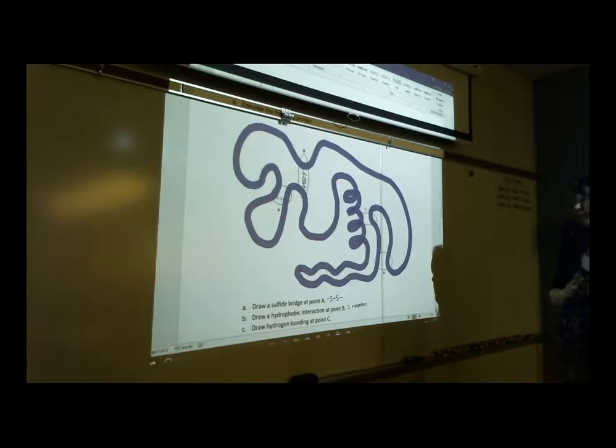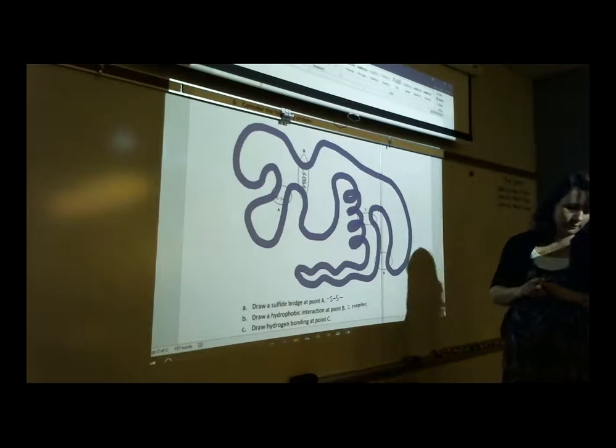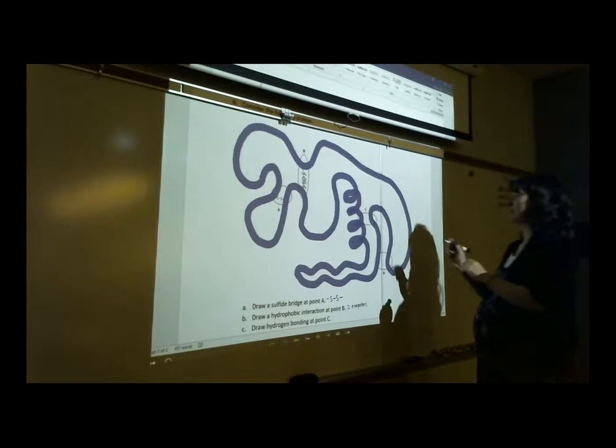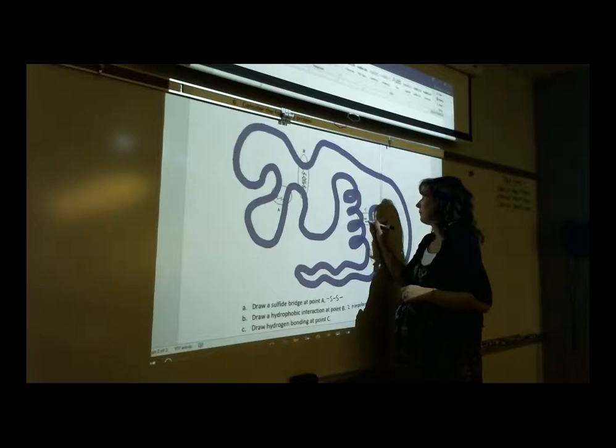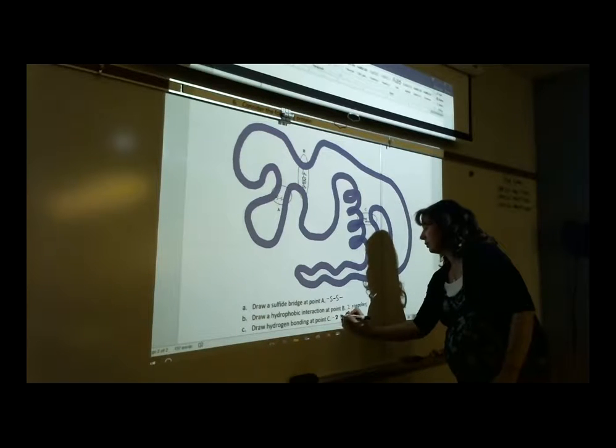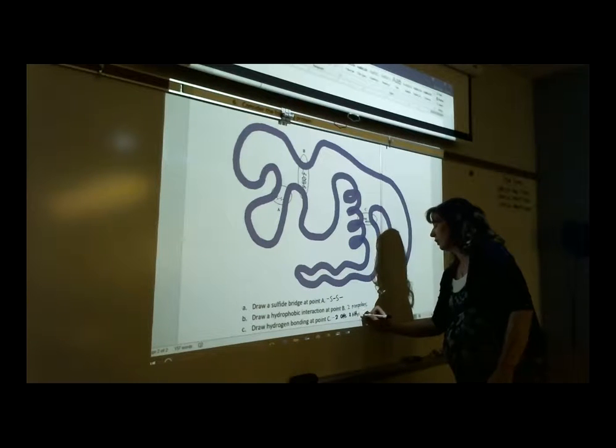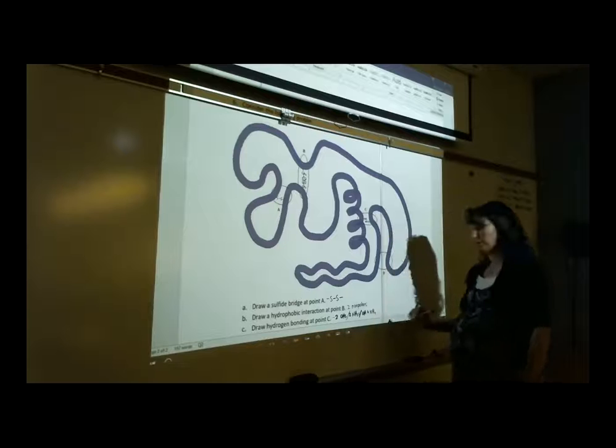Draw hydrogen bonding at point C. So what did you pick? Tyrosine and threonine. Okay. Tyrosine has OH and threonine has OH. Yep. I'm going to do two serines because it's going to fit a little easier. Right? So this is anything that's got two OHs or two NH2s or OH and NH2, right? Any of those combinations would work.